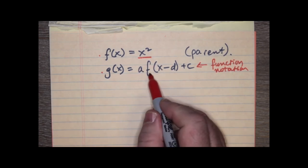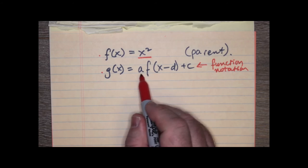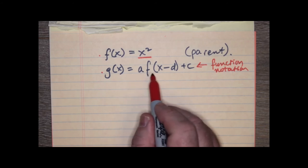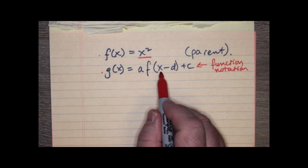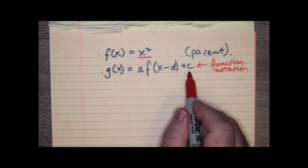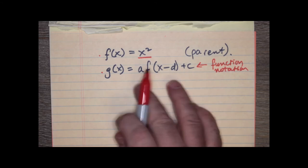But this is a formula, whereas this is not, because it's got an f here. So, we're really multiplying f at x by a, but we're also taking away d from x itself, and we're adding c to the entire function. That's kind of the idea.